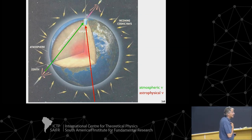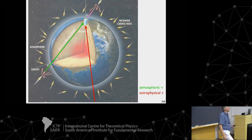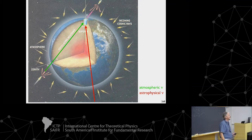A final question was raised about whether astrophysical neutrinos are expected to come mostly from transient events or as a steady flux.